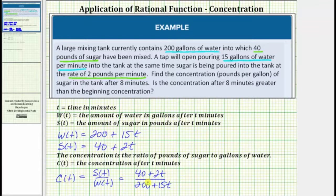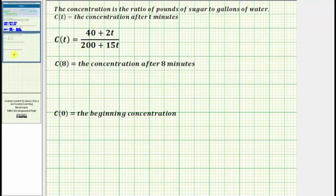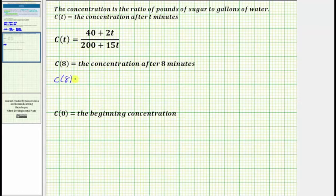Now that we have a function for the concentration of sugar in pounds per gallon of water, we can determine the concentration after eight minutes, which would be the function value c(8). We can also determine the beginning concentration, which would be c(0). To determine c(8), we substitute eight for t into our concentration function: c(8) equals the quantity 40 plus two times eight divided by the quantity 200 plus 15 times eight.